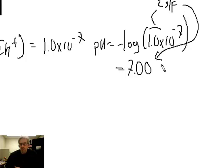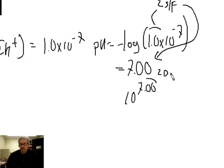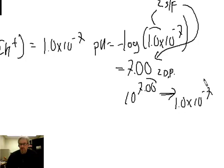By the same token, if we take the anti-log — 10^7.00 — the number of decimal places in the exponent (here, two decimal places) equals the number of significant figures in the answer. So we'd record 1.0 × 10⁻⁷. That's how we deal with significant figures when taking base-10 logs and anti-logs; the same rule applies to natural logs.